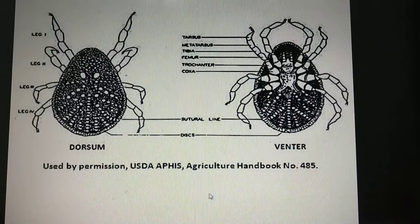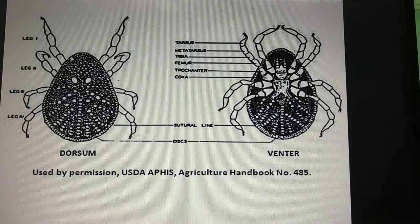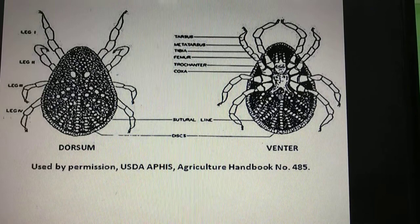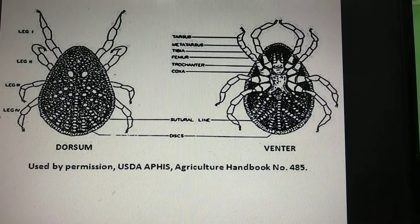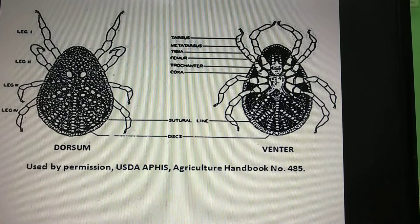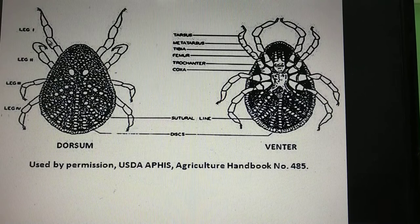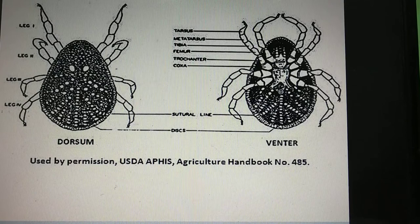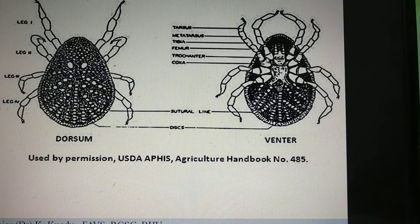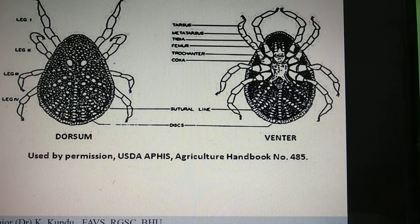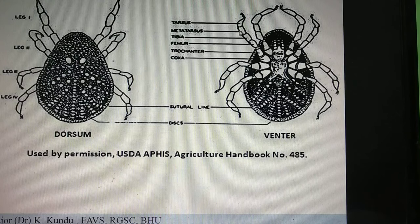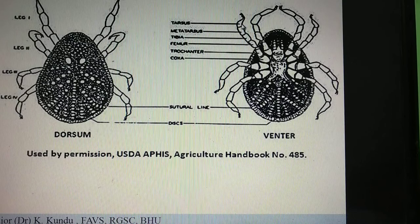Now as you can see, this is the dorsal aspect of the soft tick and this is the ventral aspect. On the dorsal aspect you can see the mammelated body — this is leathery in appearance and there are four pairs of legs. The parts of the leg are: coxa, trochanter, femur, tibia, and tarsus — these are the five parts.